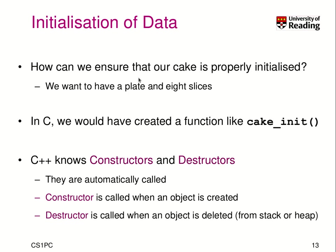A key question when we create or instantiate an object from a class is how is data actually initialized? In our case, we have our cake, but we want to ensure when we create a cake that it has a plate, for example, and eight slices by default.